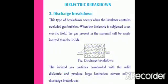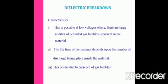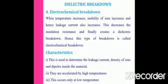In discharge breakdown, when dielectrics are subjected to an electric field, the gas present in the material easily ionizes and produces a large ionization current. The characteristics of discharge breakdown are: it occurs at low voltages, it occurs due to the presence of occluded gas bubbles, and it depends upon the frequency of the applied voltage.